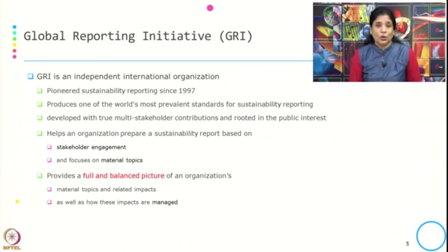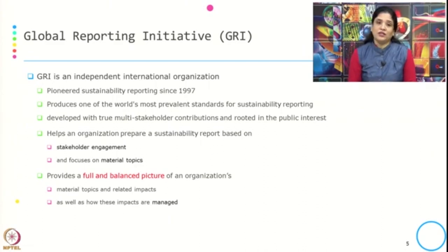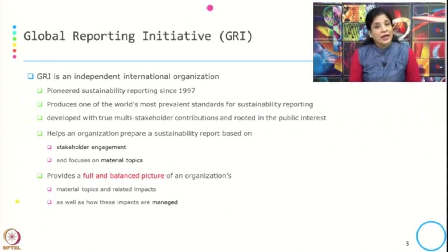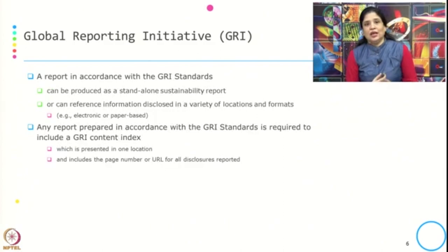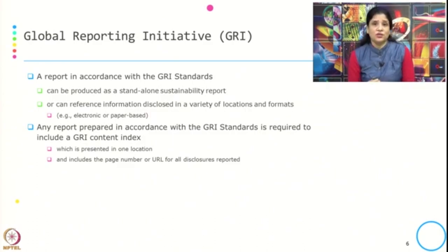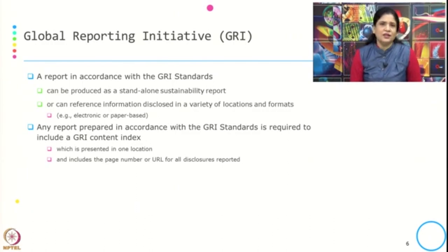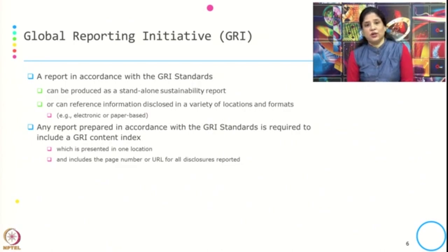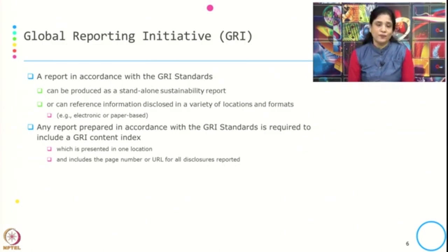GRI helps organizations prepare sustainability reports based on stakeholder engagement and focuses on material topics. The GRI framework provides a full and balanced picture of the organization, material topics, material coverage, related impacts and how those impacts are managed. A report in accordance with GRI standard can be a standalone sustainability report or can reference information in a variety of locations and formats, either electronic or paper-based, and must include a GRI content index with page numbers and URLs of all disclosures.